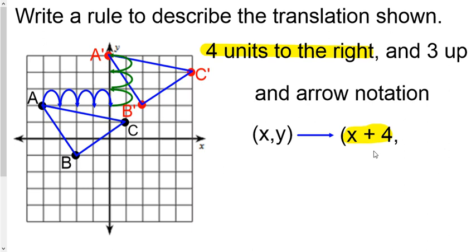Then ask yourself: was there any up or down movement? Since it was three up, we're going to say y + 3. If it was three down, we'd say y - 3. Close it with parentheses. Remember there is that comma between those.